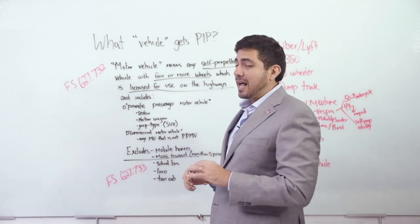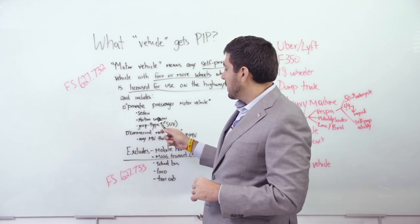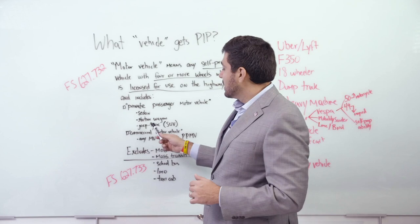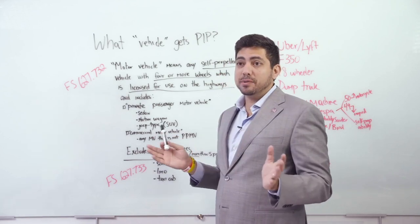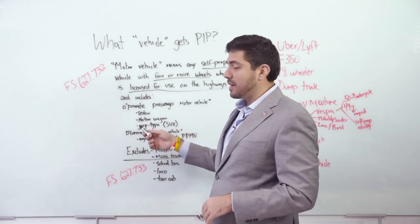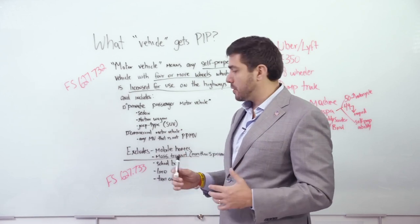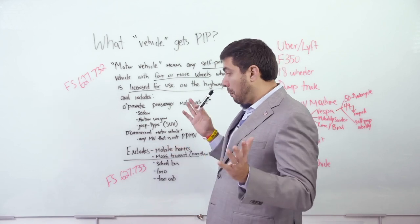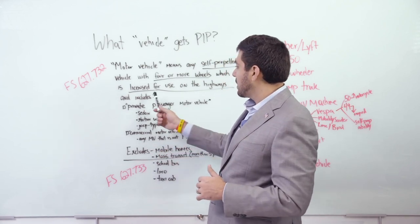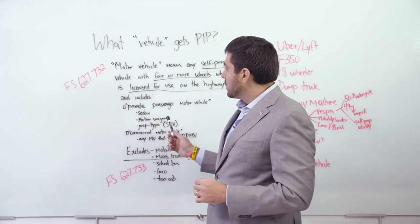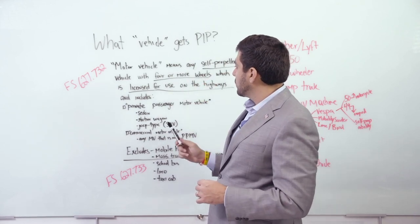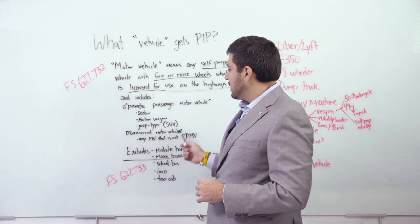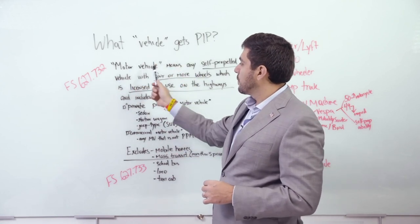We'll talk about motorcycles because there's some exceptions to that rule, but motorcycles not included with four or more wheels, which is licensed for use on the highway. So I'm just going to underline some keywords here. Any self-propelled vehicle with four or more wheels licensed for use on the highways.